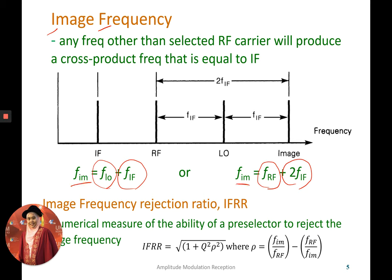So this is the frequency that we don't want in the process. We can consider it as a distortion. And we want to know how much the image frequency has interrupted our system by getting the frequency, sorry, the value from the image frequency rejection ratio or IFRR.